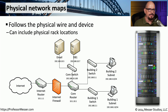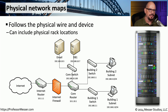One common type of network documentation is the network map. There are different types of network maps that you might want to create. One type is a physical network map, which shows the physical layout of the equipment, the cabling, and everything in between.